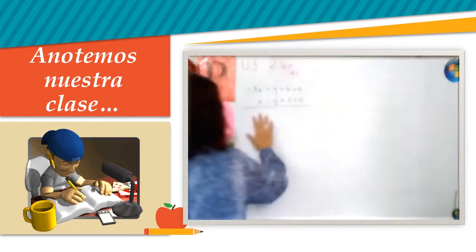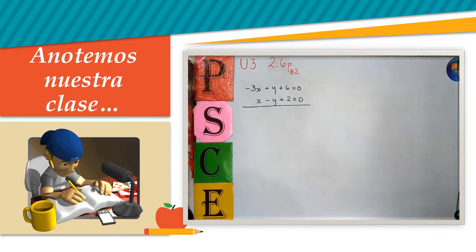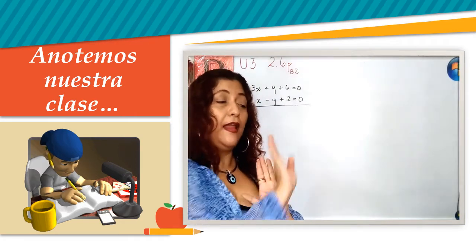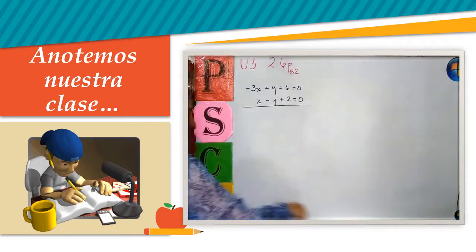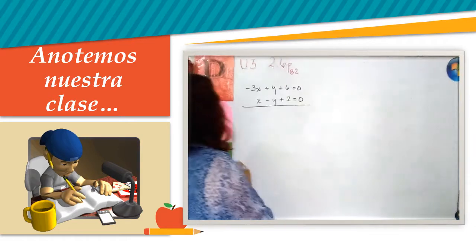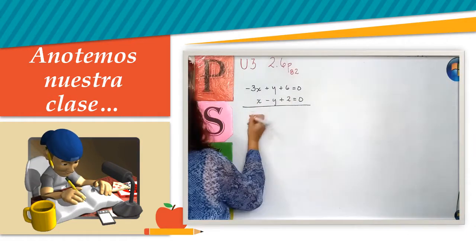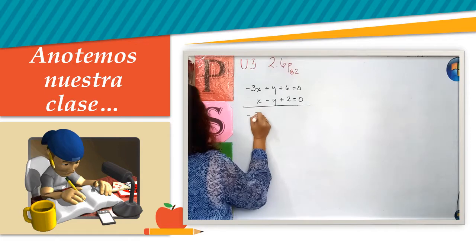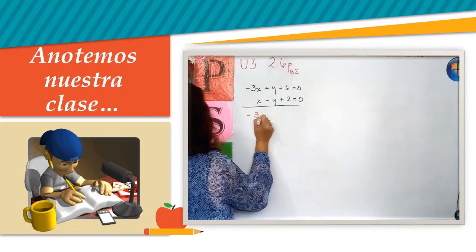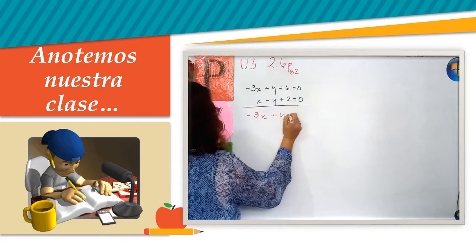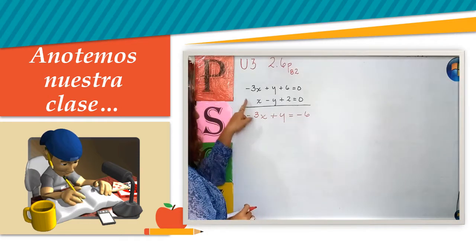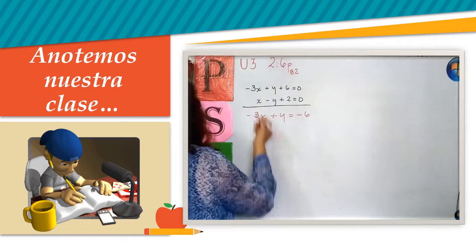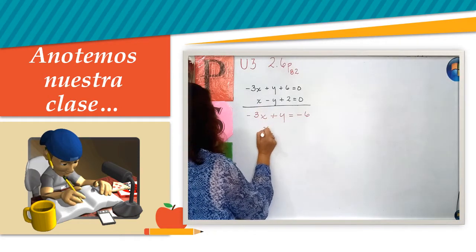Tengo esta expresión. Lo primero que yo voy a hacer es trasladar las constantes. Esto me quedaría: menos 3x más y es igual a menos 6. Y la segunda me quedaría: x...